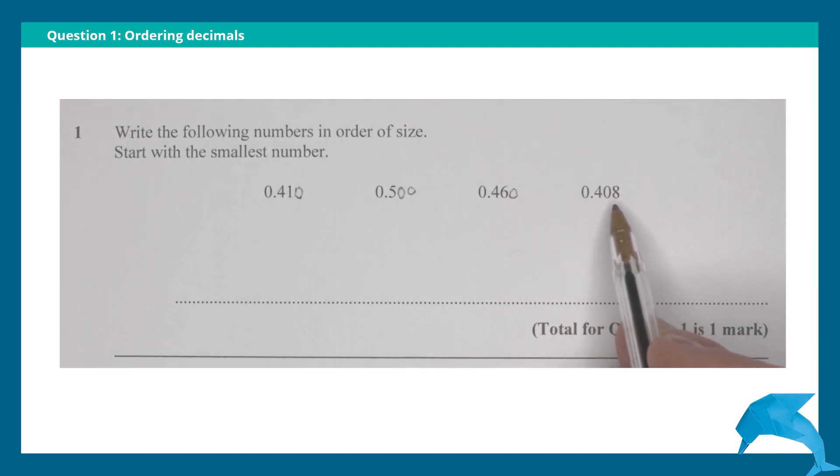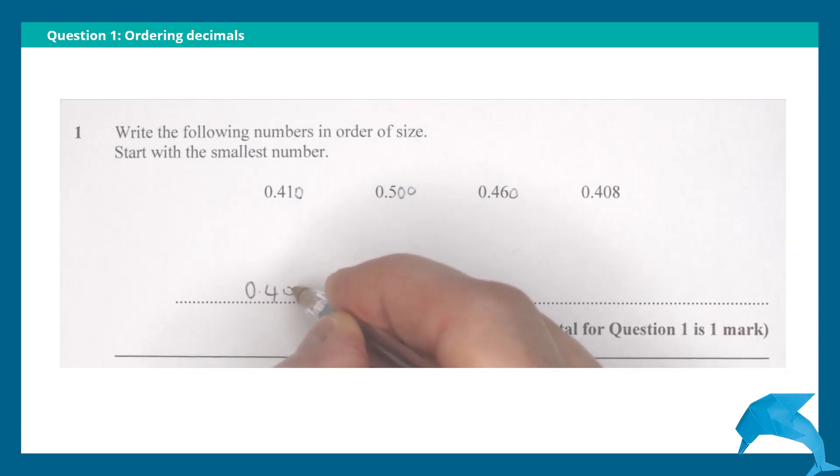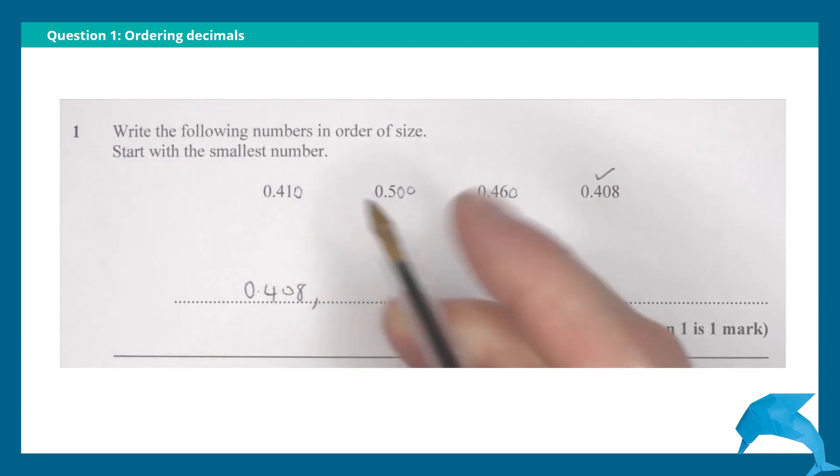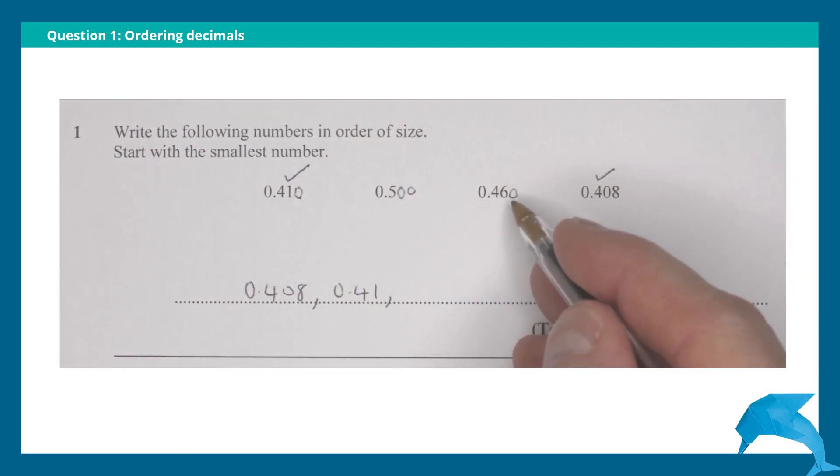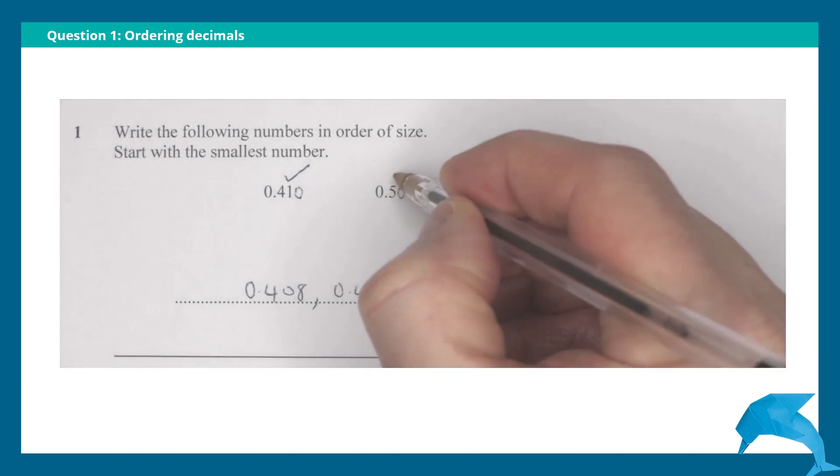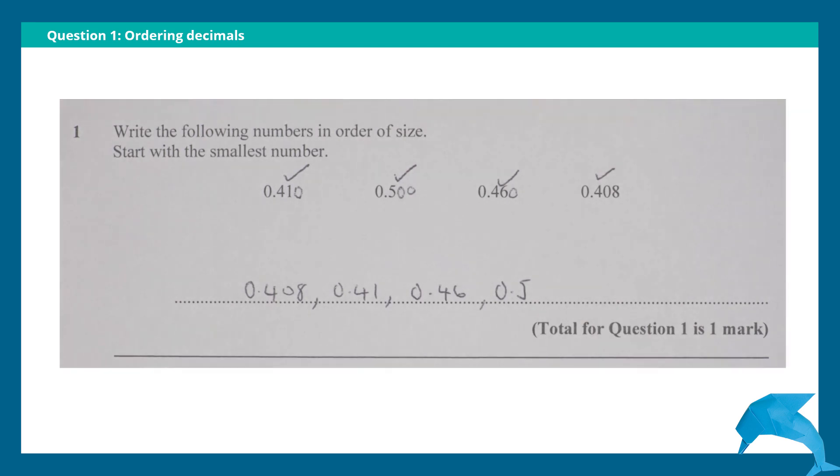So the smallest number is 0.408. Then 410, so 0.41. Then 460, so 0.46. And finally the largest, 500, so 0.5. The numbers in order of size starting with the smallest number, for one mark for question one.